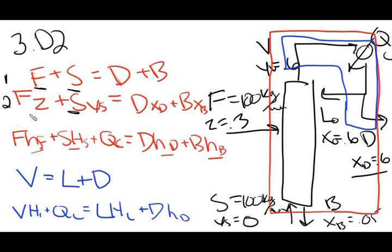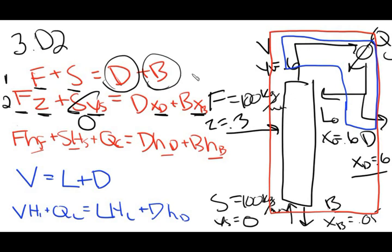We know z (feed composition), we know y_S (which is actually zero since the steam is pure water), and we know x_D and x_B. So we have two unknowns — D and B — in two equations, which means we can solve for D and B. The problem is asking for L over D, the external reflux ratio. We'll be able to find D, and we just need to find L, so we can get L over D by dividing.